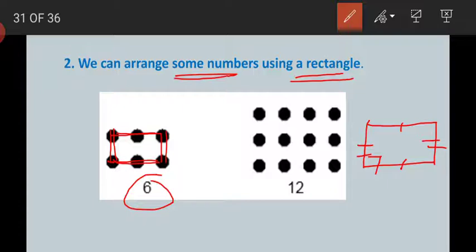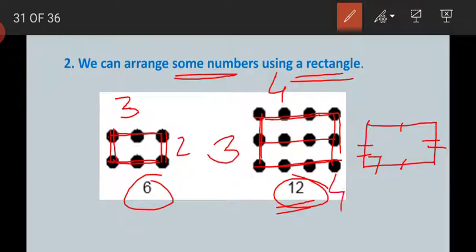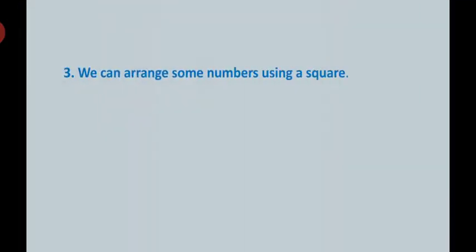The opposite pairs of sides are equal and each angle is 90 degrees. There are three dots on one side and two dots on the other — three, three and two, two. We can also make a rectangle using twelve dots in this way, with four dots on each longer side and three on each shorter side. You can arrange some numbers to make a rectangle.